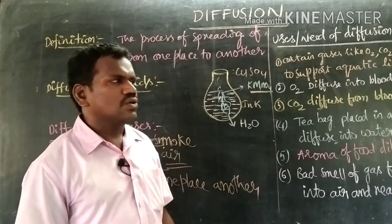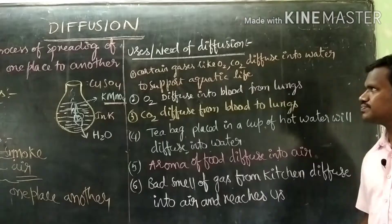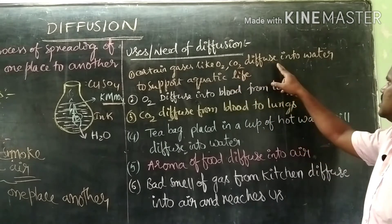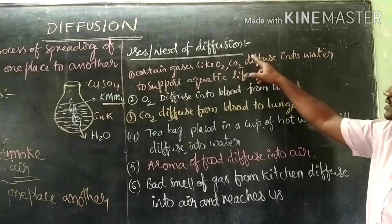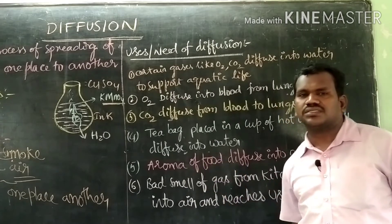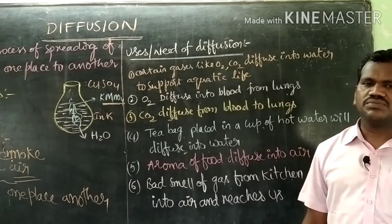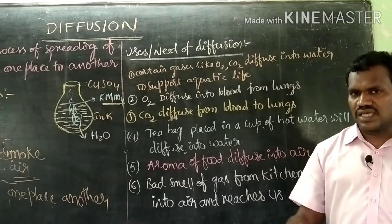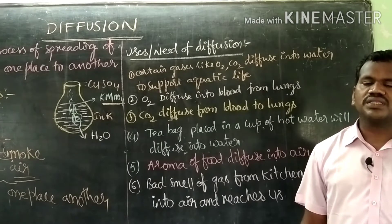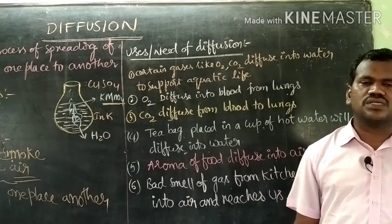Let us understand the different examples and uses of diffusion. Certain gases like oxygen and carbon dioxide diffuse into water to support aquatic life. Whenever there is rainfall, oxygen mixes with water and dissolves in it, and that oxygen is taken by aquatic animals like fish and aquatic plants to sustain life. Again, they release carbon dioxide, which is also released back into the water.